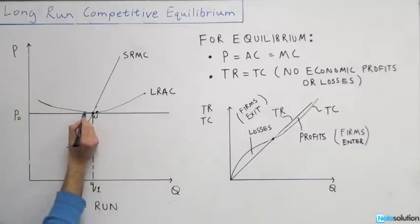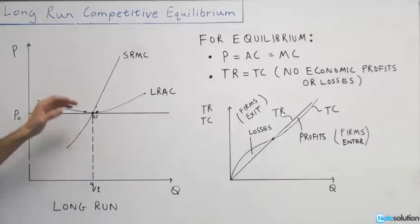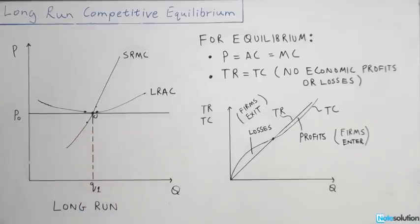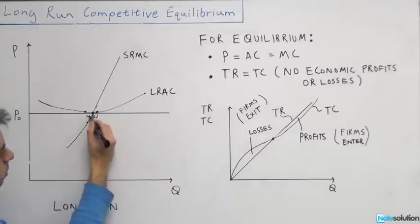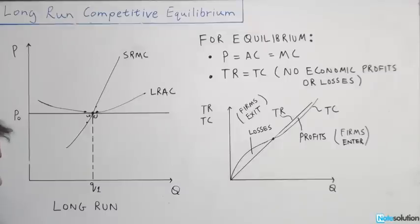Taking another point on the other side: your long-run average cost is greater than your price, but your marginal cost is lower, so the cost of producing the extra unit is less than the price you're getting in the market. It would pay you to increase production and go back to the equilibrium point where your price equals the cost of producing the last unit as well as the average cost in the long run. That's basically why price equals average cost in the long run.